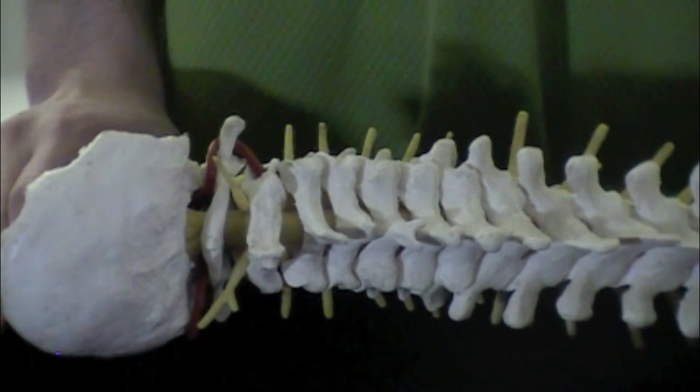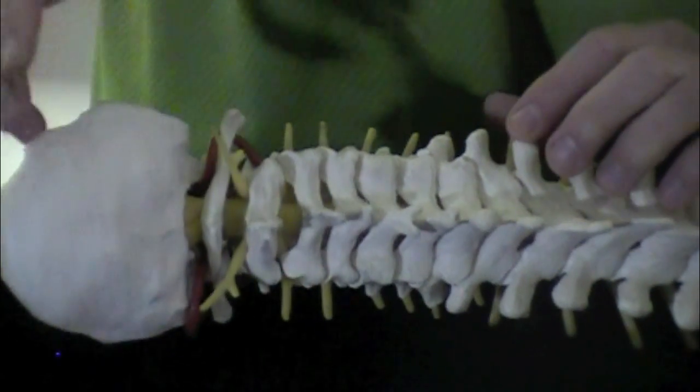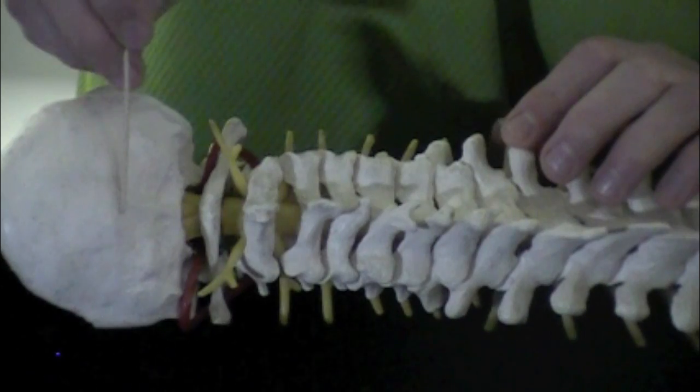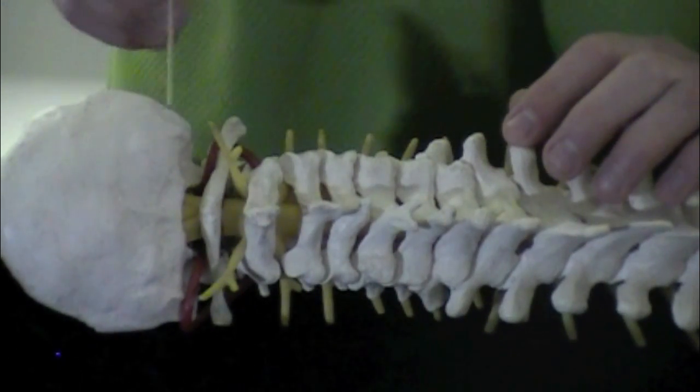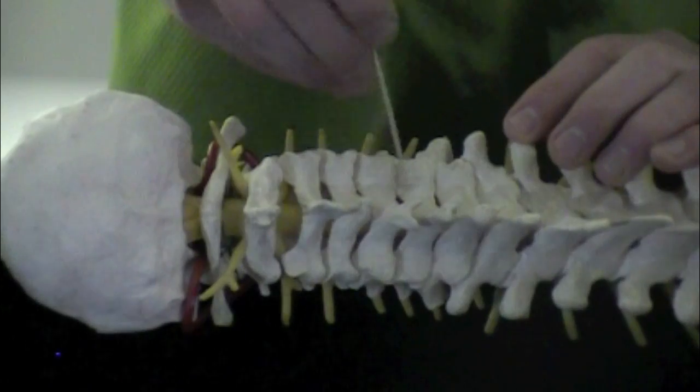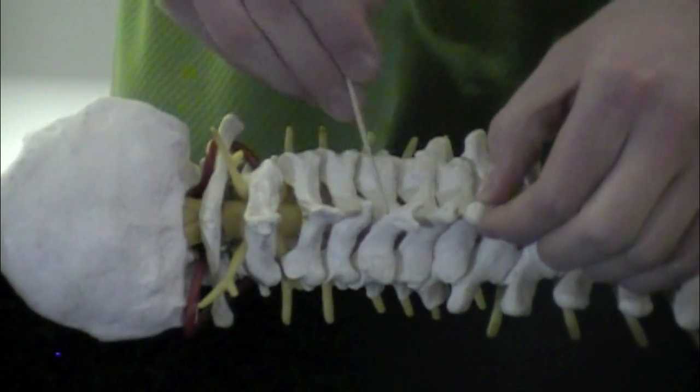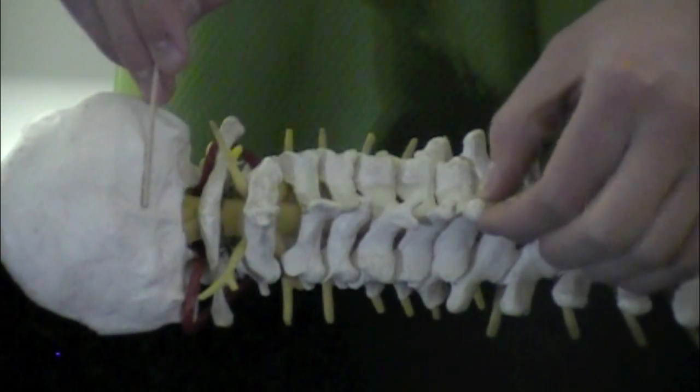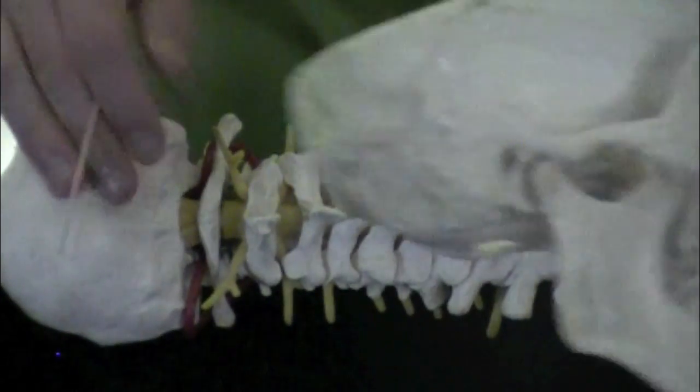We're going to go over the ligaments of the skull here. There's only two that you guys need to know. One is the nuchal ligament. It's going to go from the occipital crest down to C7. If we count out these vertebrae, we have C1, C2, C3, C4, C5, C6, C7. That's going to be right here. The nuchal ligament is going to go right along here. You can't see it on this model.